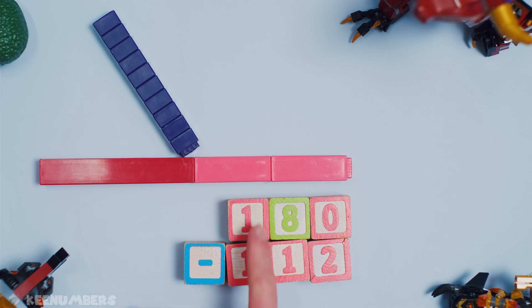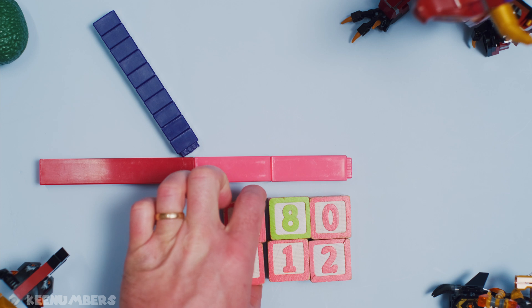Oh, well, this is very easy. Don't worry about it. 100 take away 100, nothing. 8 tens minus 1 ten, that's going to give us 7 tens.